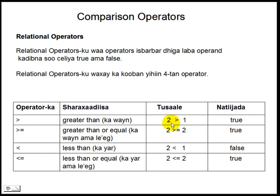Shaqadiisu waa in uu isbarbar ligah labadha lambar ee labadha ku jira. Kadibna u so'iliyo value ga amanna natijaada kasoo baxda isbarbar ligahs. Tusaala ahaan, two is greater than one wa true. Si ugu fudud loo akhrikaroh laguna fahmikaroh, marka afsomaali lagu akhrinayoh, wa inaad su'al ka diktid. Tusaala ahaan: lambar ka labo makawwain ya hay lambar ka kow? Jawabtu wa haa, sababtu ah lambar ka labo waa wein. Hadii jawabtu ay tahay haa, value ga amanna natiijadu wa true; hadii kale wa false.